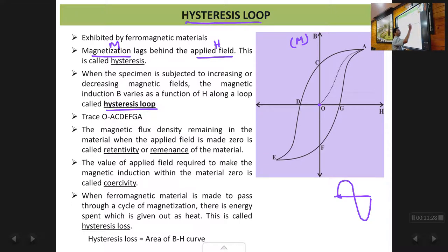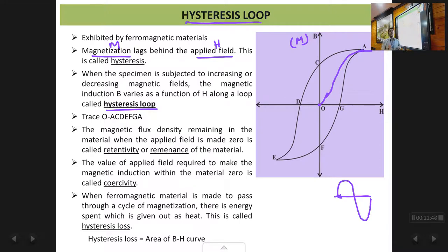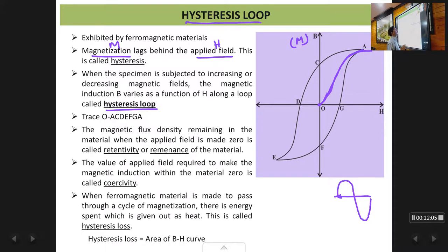As we increase the magnetic field from point O, the magnetization also increases — you can see in the graph there is an increase in magnetization as the magnetic field increases. Then it starts to become constant, approaching a saturation value at point A. If you keep increasing beyond point A the magnetization will remain the same constant value — that is saturation at point A. So from O to A, as we increase the magnetic field, the magnetization increases and reaches saturation.